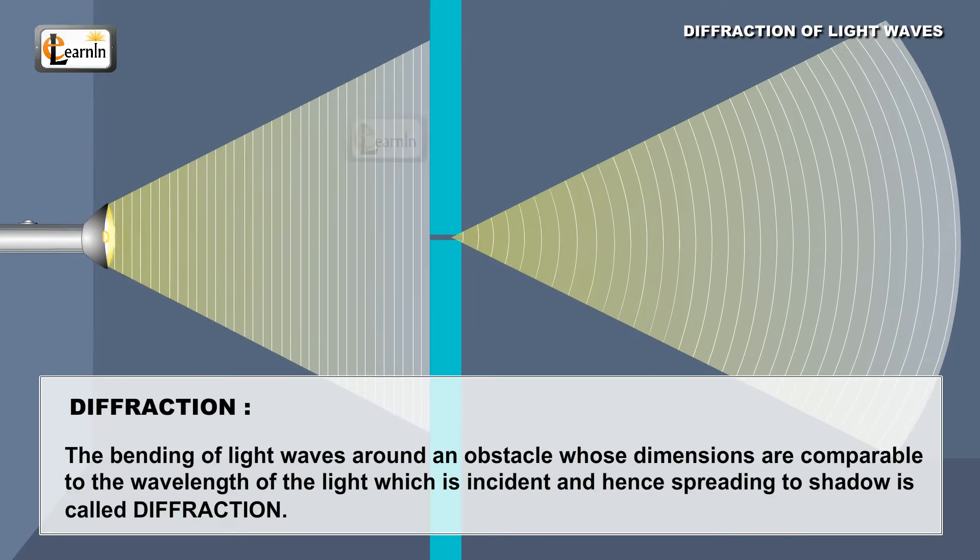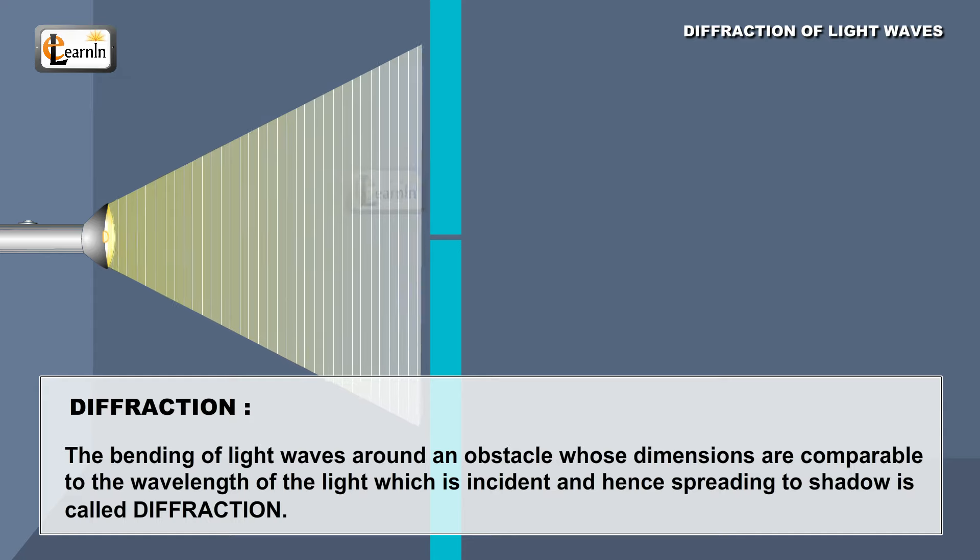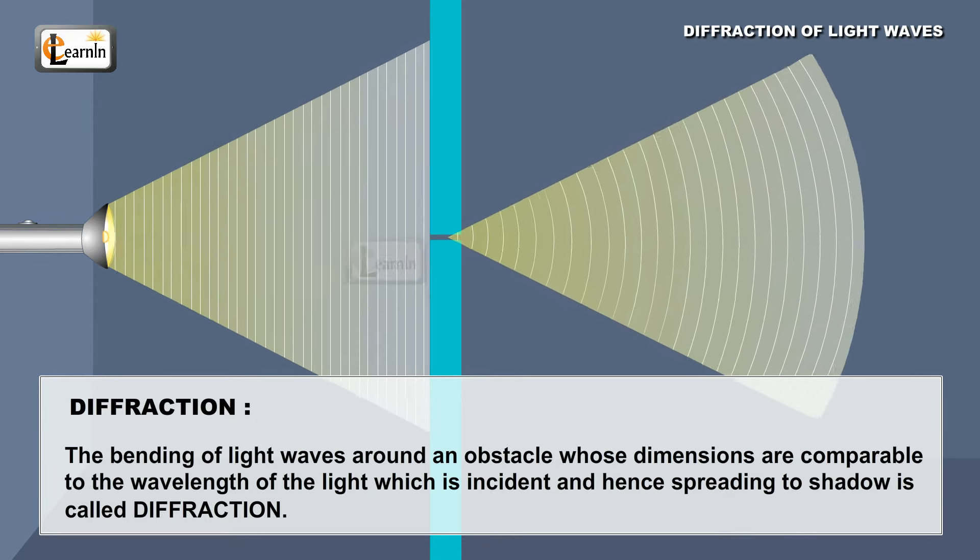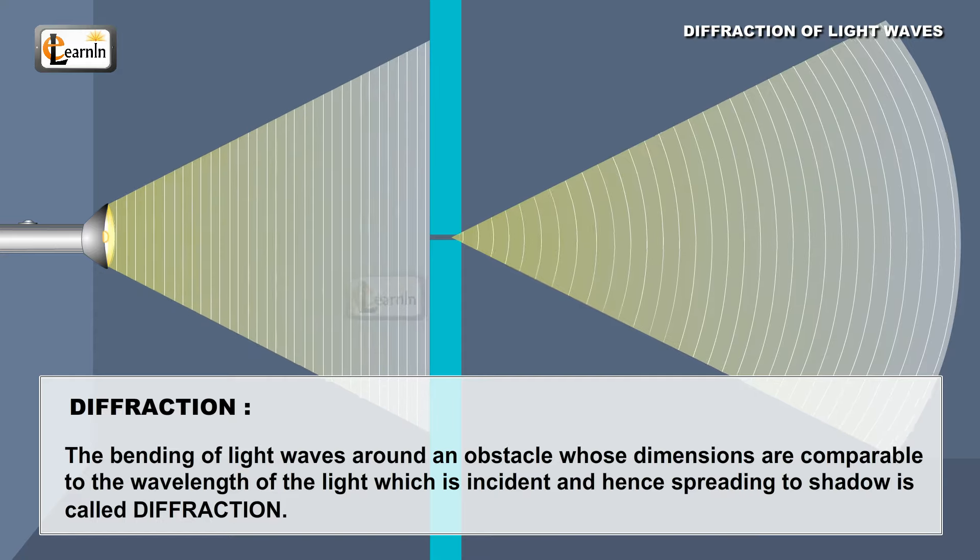The bending of light waves around an obstacle whose dimensions are comparable to the wavelength of the light which is incident and hence spreading to a shadow is called diffraction.